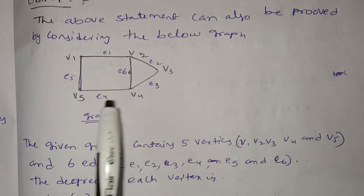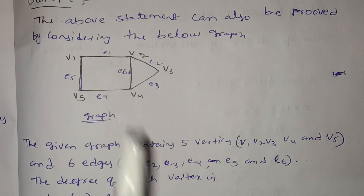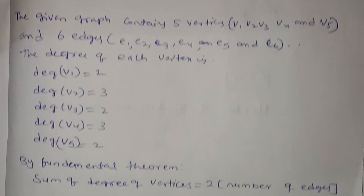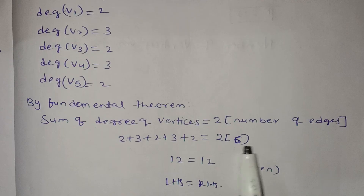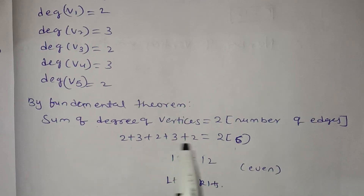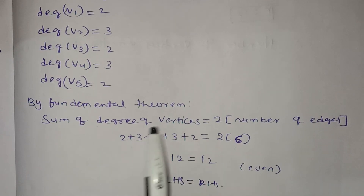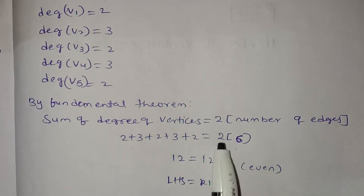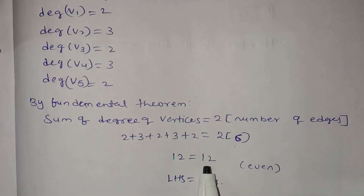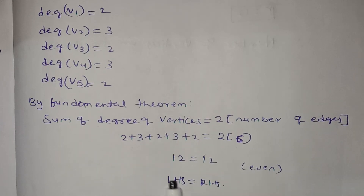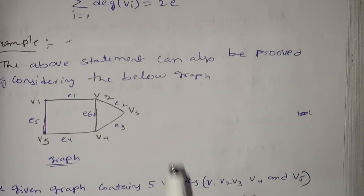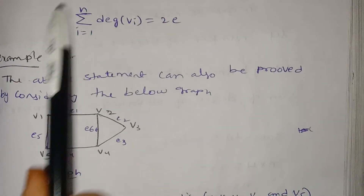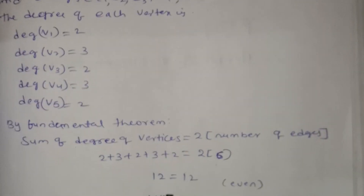If we have 6 edges, then 2 into 6 equals 12. LHS equals RHS, so 12 equals 12. This proves the handshaking theorem using this formula.